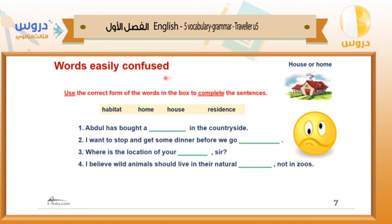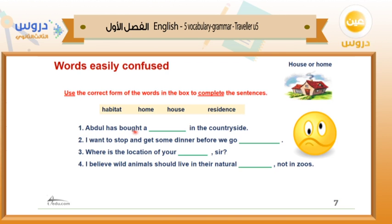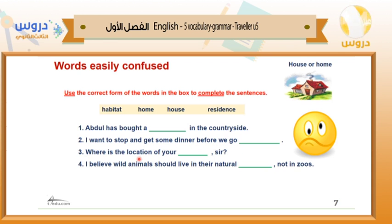Words easily confused: use the correct form of the words in the box — habitat, home, house, and residence — to complete the sentences. Number one: 'Abdul has a boat ___ in the countryside.' Number two: 'I want to stop and get some dinner before we go ___.' Number three: 'Where is the location of your ___ now?' Number four: 'I believe wild animals should live in their natural ___, not in zoos.'